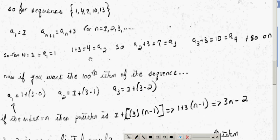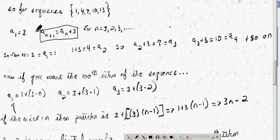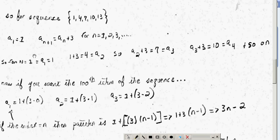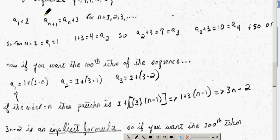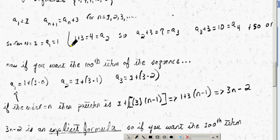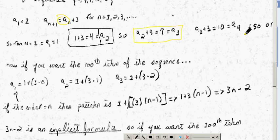For the sequence 1, 4, 7, 10, 13, your a₁ is defined as 1, and here is the implicit formula for how to find the next term. You plug your previous term in to get the next one. So if n equals 1 and a₁ equals 1, you plug a₁ into the formula: 1 plus 3 is 4, which is a₂. Then to find a₃, you plug a₂ back in: 4 plus 3 is 7, and so on — giving you 10, 13, 16, etc.